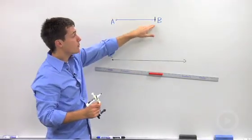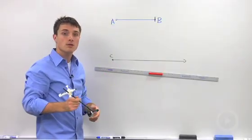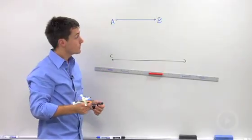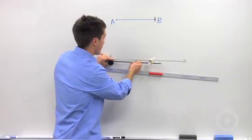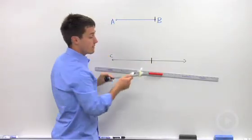Now on your quiz, do not erase that mark. That's what your teacher is going to look for to make sure you're doing it correctly. Then you're going to take, without changing your compass, the sharp end onto point C, and you're going to create that same mark.